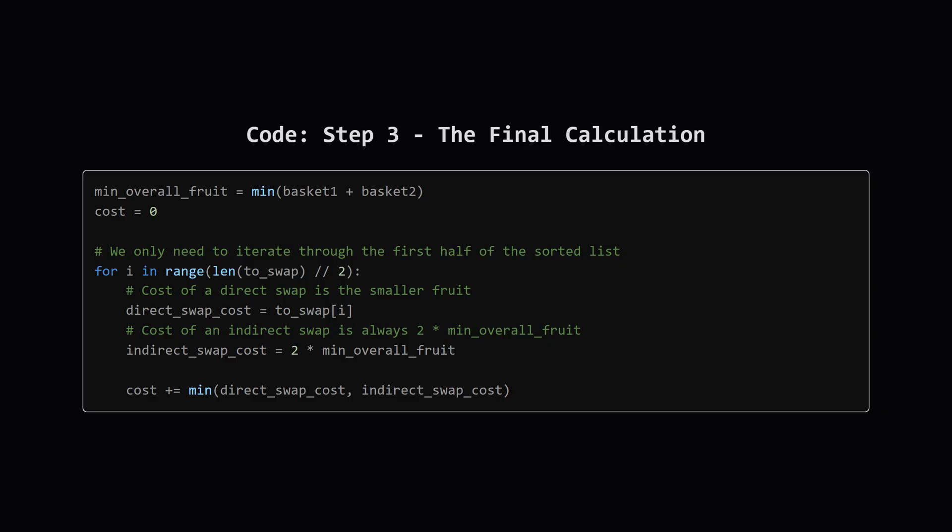Let's call it min_overall_fruit. Then, it iterates through the first half of our sorted to_swap list. For each of these small fruits, it pairs it with a large fruit from the list, and calculates the cost. The cost is the minimum of two things. The cost of the small fruit itself, which represents the direct swap, OR, 2 times the min_overall_fruit, which represents the indirect swap. We add the cheaper of these two options to our total cost, and that's it.